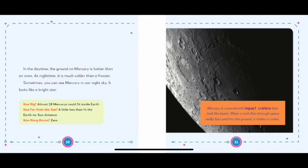Mercury is covered with impact craters that look like bowls. When a rock flies through space really fast and hits the ground, it makes a crater.